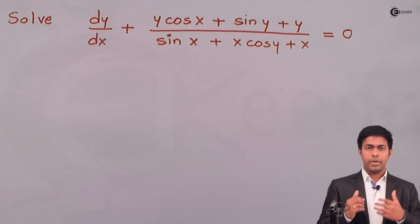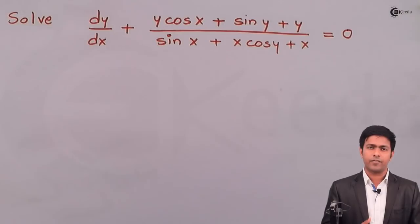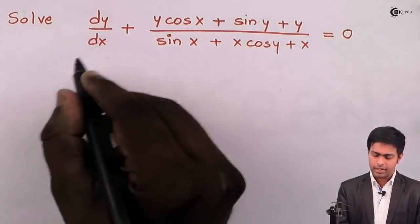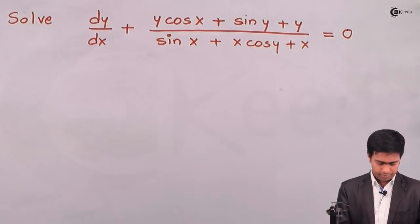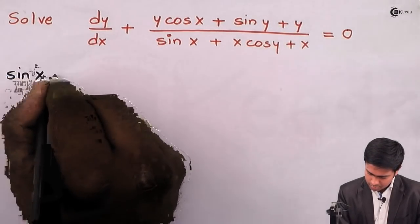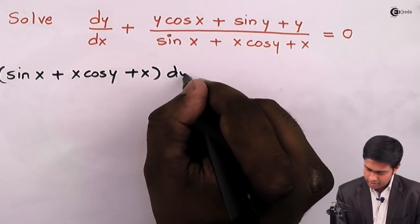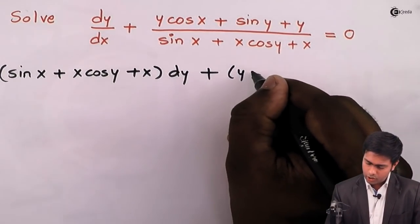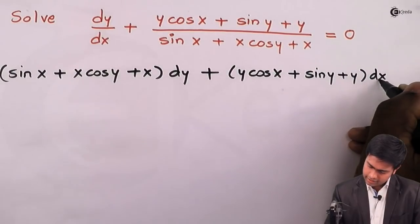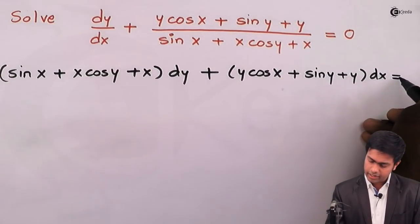To check whether it is exact or not, we have to bring it in the form M dx + N dy = 0, then check the condition of the exact differential equation. By cross multiplication, we get (sin x + x cos y + x) dy + (y cos x + sin y + y) dx = 0.